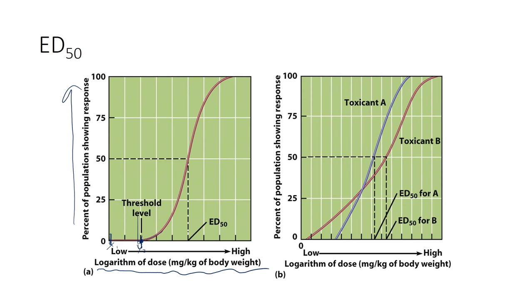The ED50 or LD50 level on the curve is wherever the 50-percent line intersects your dose-response curve. When you do your graphs of the effect of saltwater on mung bean sprouts, you'll look for where 50 percent intersects the line connecting your data points — that would essentially be your LD50 concentration for saltwater on mung beans.